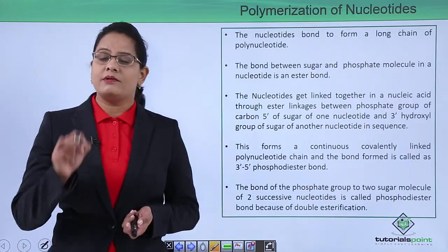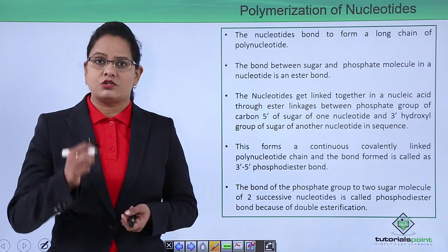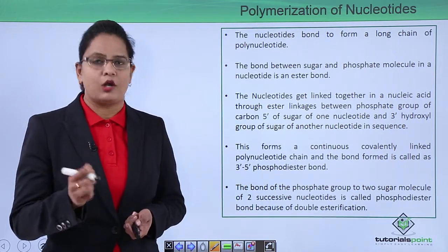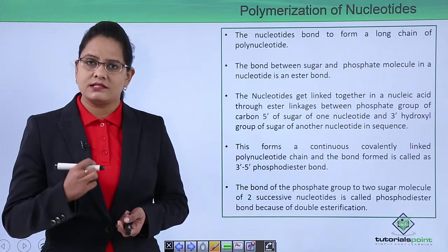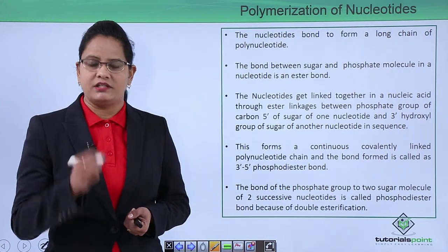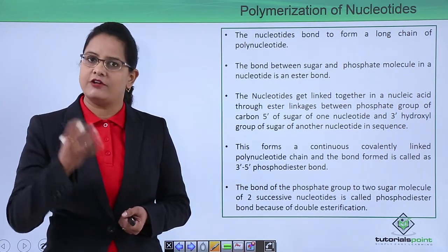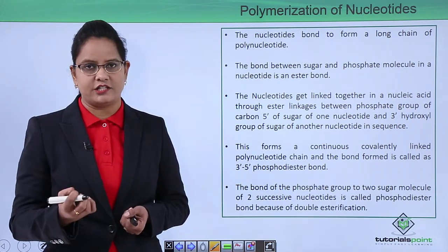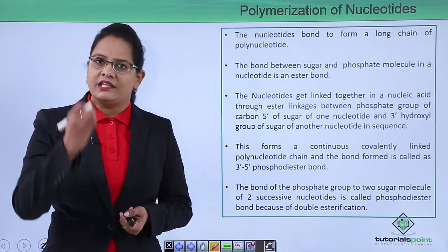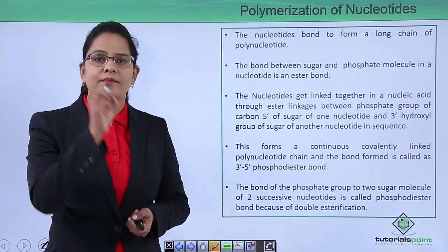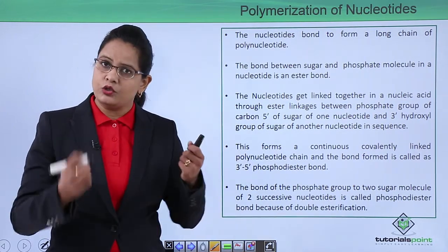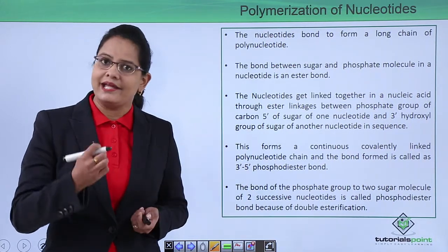Nucleotides are the monomers for forming the biopolymers known as nucleic acids. The bond between individual nucleotides is an ester bond — this is important to keep in mind. We know that when an individual nucleotide is formed, there is a bond between the five prime hydroxyl and a phosphate group, which is an ester bond.